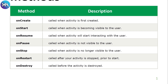When the user clicks the icon of your app, the app launches and the first method called is onCreate. The second method is onStart — it is called when the activity is becoming visible to the user, meaning the user is seeing something on their phone or tablet.